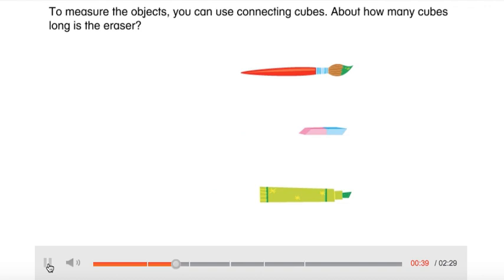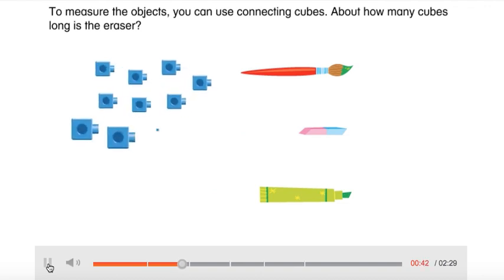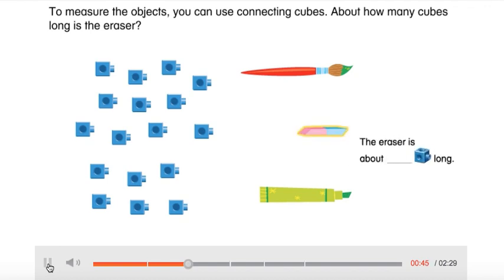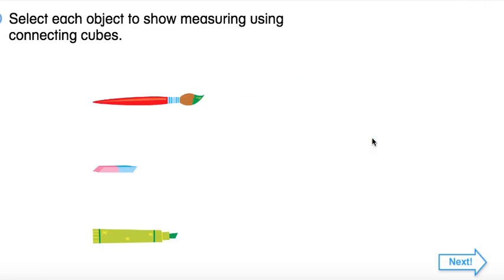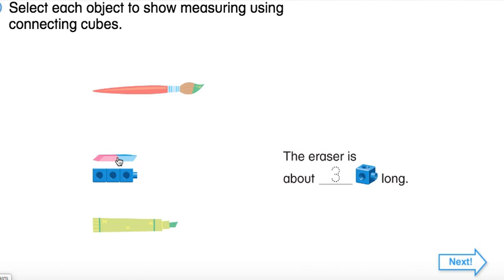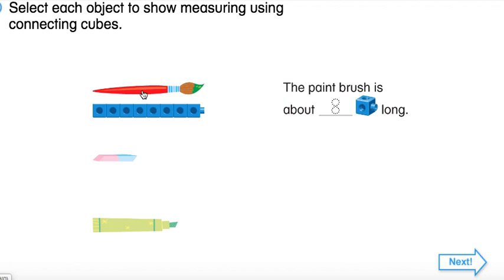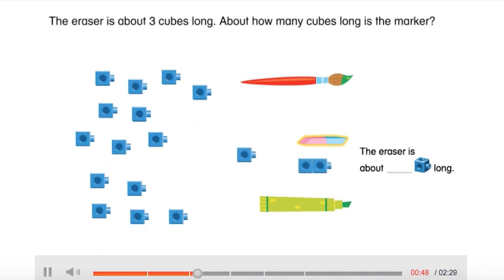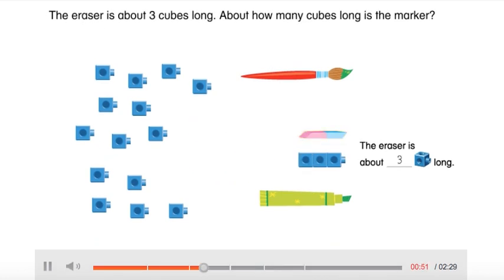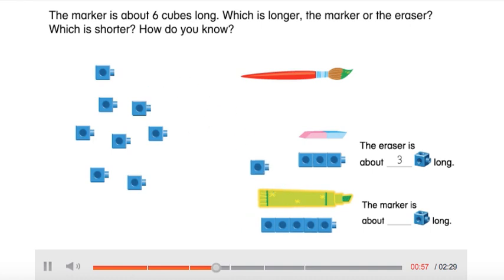To measure the objects, you can use connecting cubes. About how many cubes long is the eraser? The eraser is about three cubes long. The paintbrush is about eight cubes long. The eraser is about three cubes long. About how many cubes long is the marker? The marker is about six cubes long.